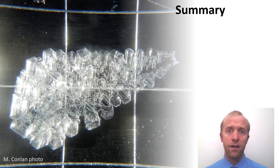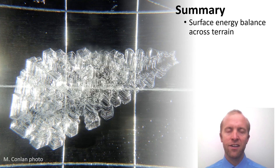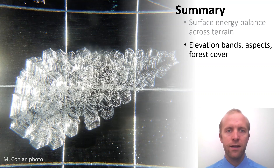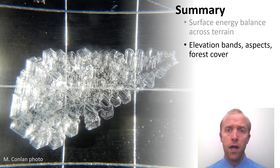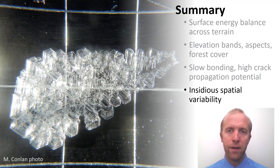Putting it all together: the distribution of surface hoar is dictated by the surface energy balance across terrain, often forming patterns tied to elevation, aspect, and forest cover. Surface hoar is slow to bond and has a structure that is favourable for crack propagation. The insidious spatial variability and weak structure make for challenging avalanche problems that generally require large safety margins.